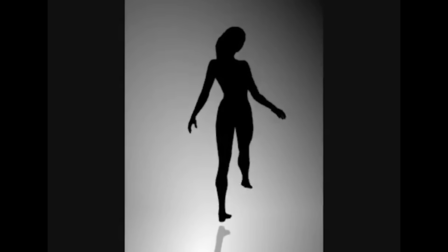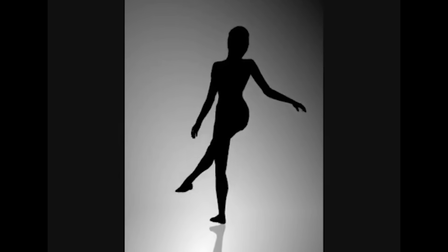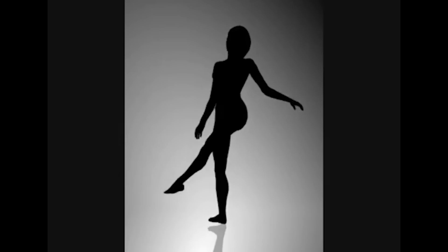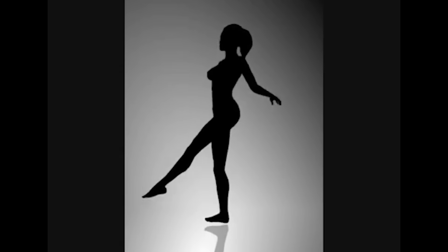Kinetic Depth Effect. This spinning dancer can be seen to be spinning in both directions. This happens because there's a lack of visual cues for depth. For example, the dancer's arms can be perceived to be moving in the foreground, between her and you, or in the background, behind the dancer's body.